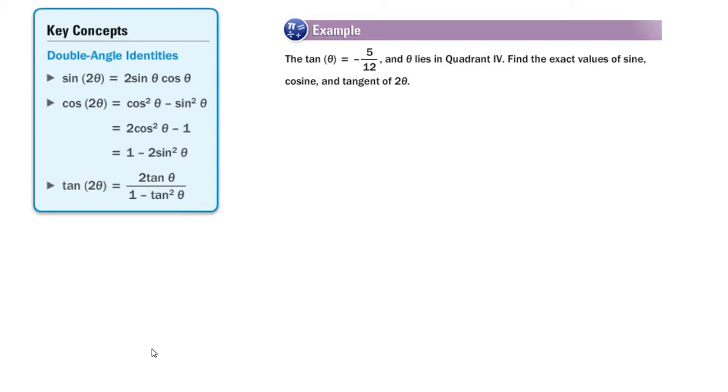So let's see what they give us. The tangent of some angle is negative 5 twelfths, and notice they give us another piece of information, which they need to - that angle is in quadrant 4. They want us to find the exact values of the sine, cosine, and tangent of twice theta, so that double angle.